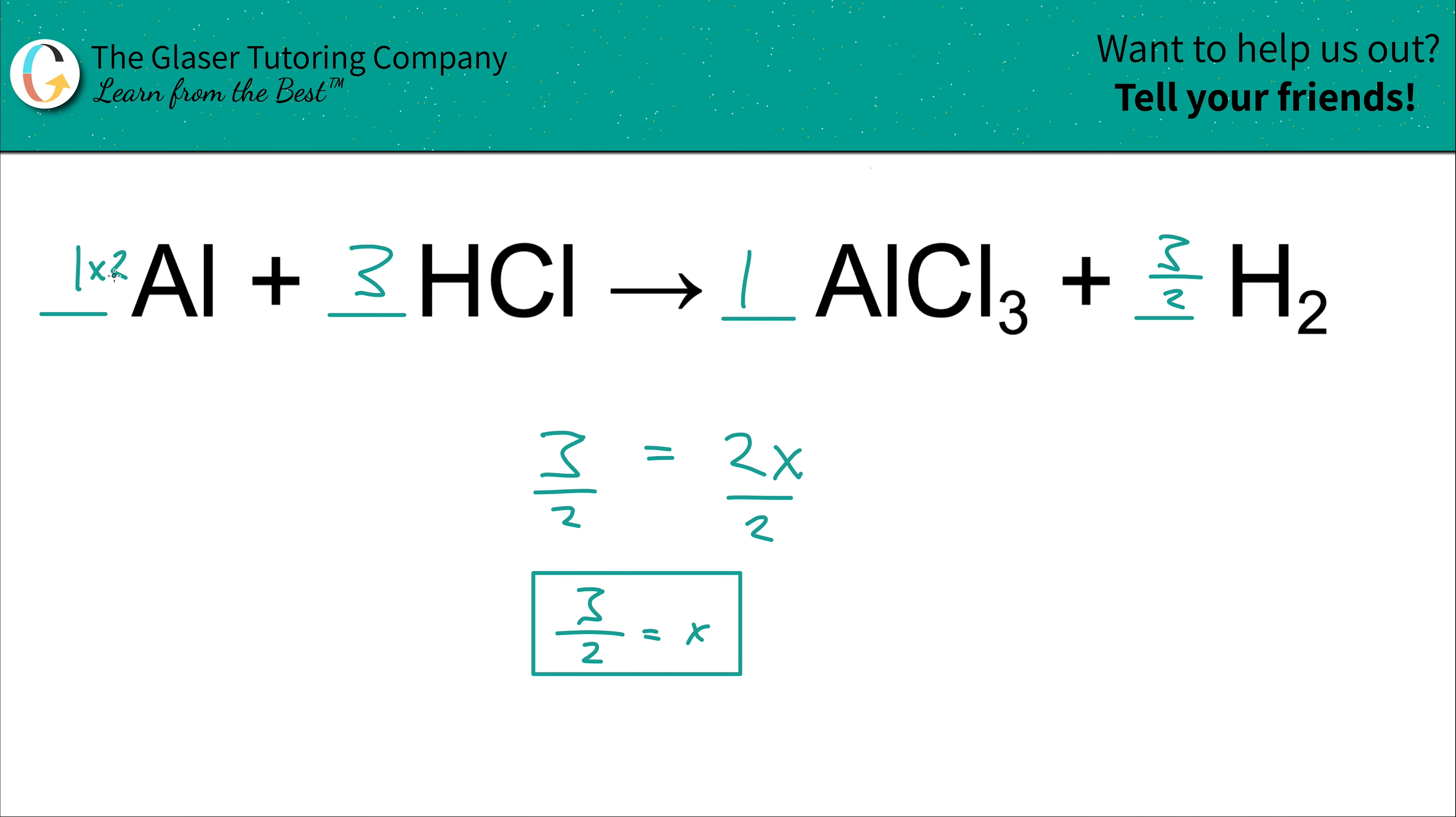So one times two is simply going to be two. Then it's going to be three times two. That's going to simply be six. One times two now, that's simply going to be two. And then three halves times two. This is always going to work. The denominator will always just cancel. It's just going to be whatever numerator value it was, and that's going to be a three. And there you now have it. That's your balance equation.